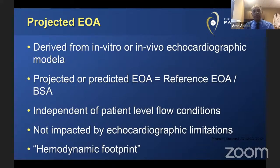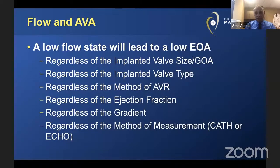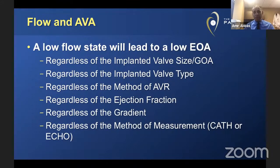The benefit of the projected effective orifice area is that it's independent of patient-level flow conditions and not impacted by other echocardiographic limitations — it acts as a hemodynamic footprint for the valve. A few years ago, projected effective orifice areas were also determined for TAVR valves in a paper by Dr. Hahn, Dr. Pibarot, and colleagues, establishing what a predicted area would be for different sizes of TAVR valves. An important concept: for a given low flow state, because flow is part of the equation, low flow can give you a low effective orifice area regardless of valve type, size, method of replacement, ejection fraction, or whether measurement is invasive or by echocardiography.